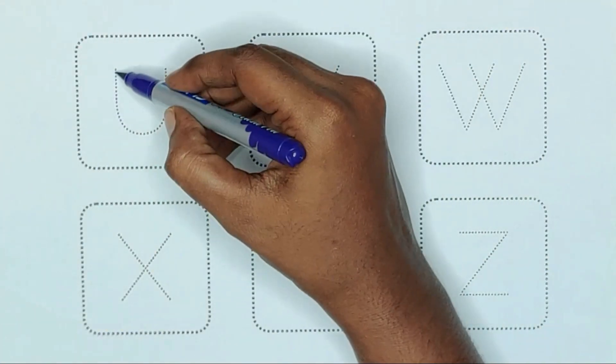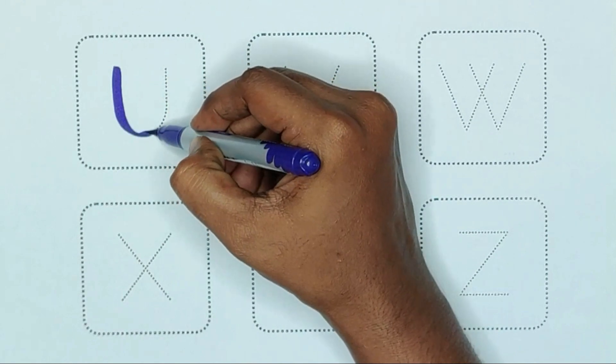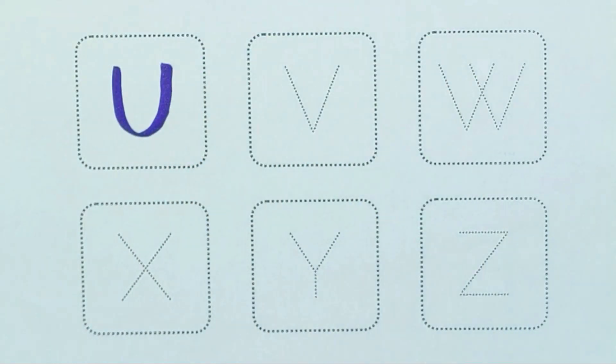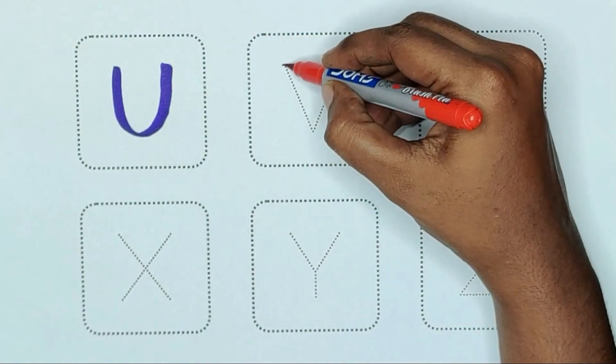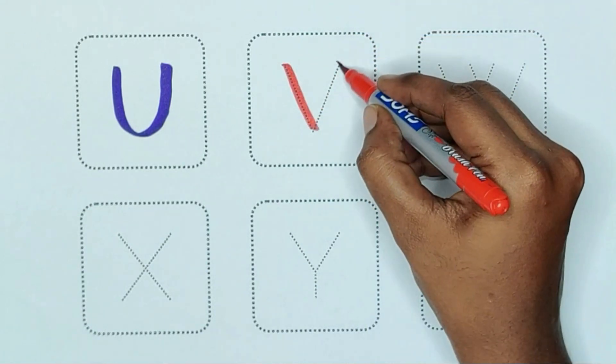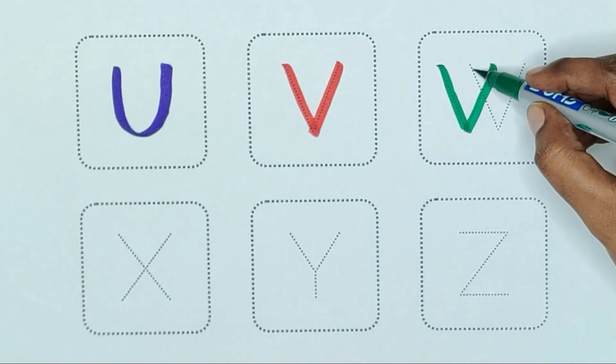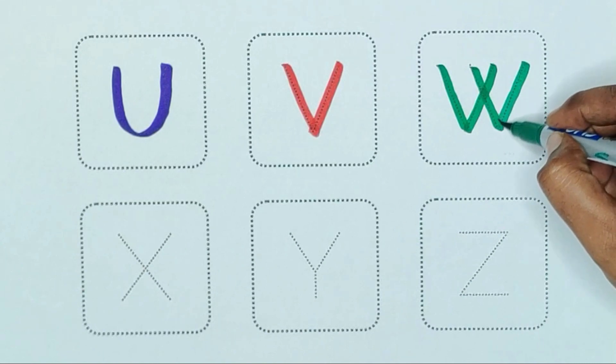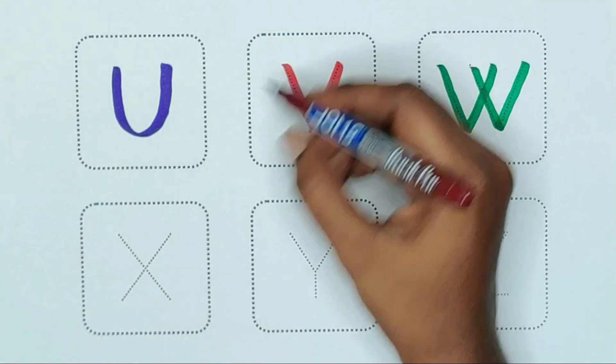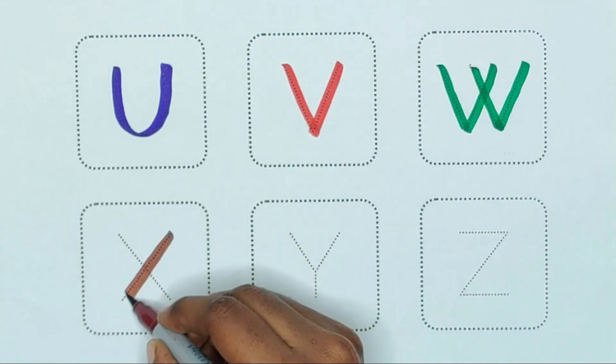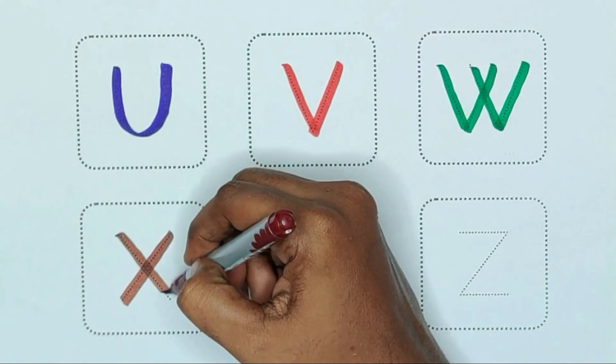Violet color, U, U for unicycle. Red color, V, V for violin. Green color, W, W for watermelon. Brown color, X, X for xylophone.